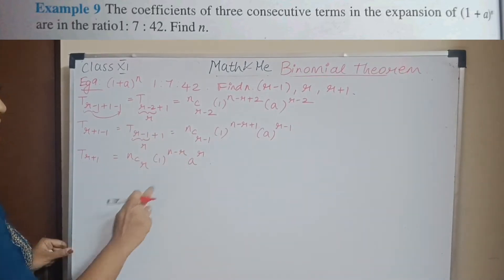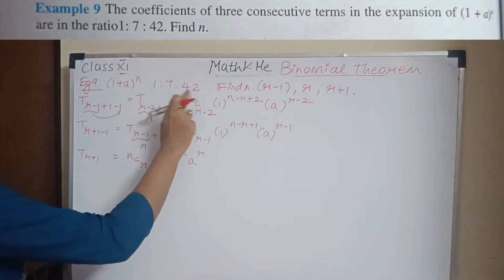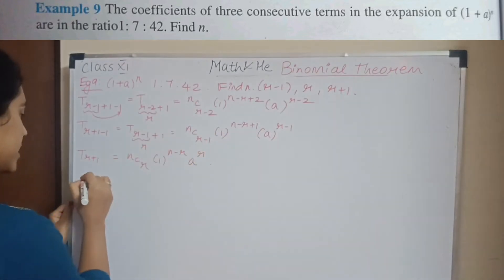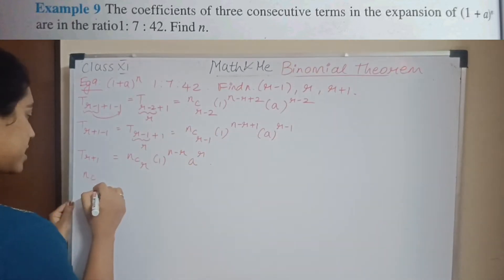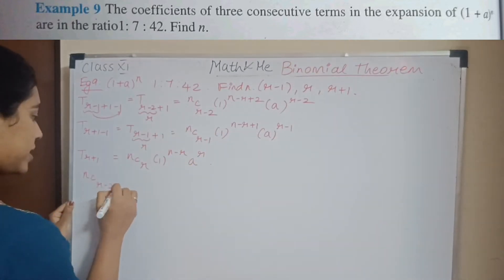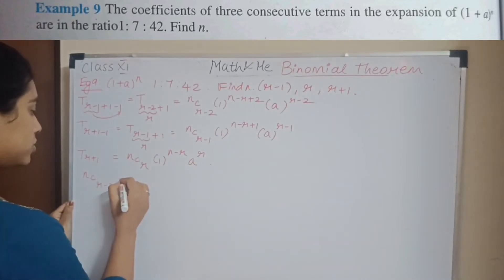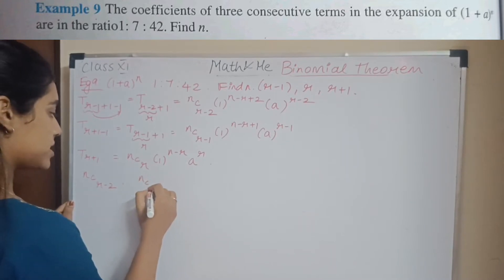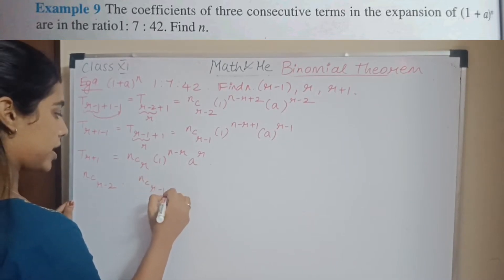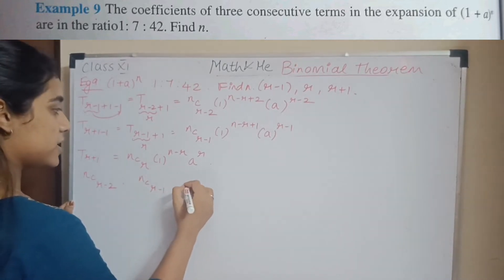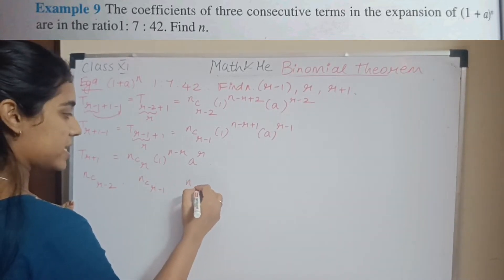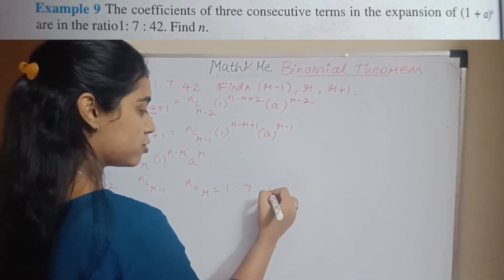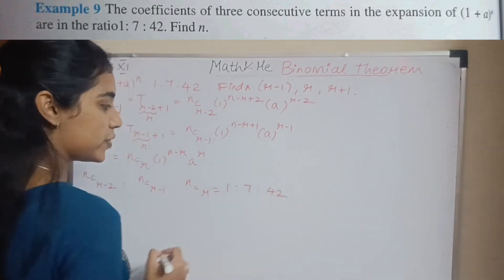The coefficients are in the ratio 1:7:42, so we have nC(r-2) : nC(r-1) : nC(r) = 1 : 7 : 42.